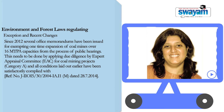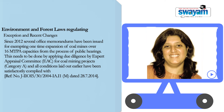The third exception and recent change is also important: since 2012, several office memorandums have been issued exempting one-time expansion of coal mines over 16 MTPA. Very recently, after the new government was formed, another office memorandum was issued stating that public hearing can be done away with — an exception for public hearing has emerged for all coal mining operations expanding above 16 MTPA capacity. The expert appraisal committee must exercise due diligence in deciding which mines should be exempted and must be satisfied that the mine has complied with all clearance conditions stipulated prior to the expansion.